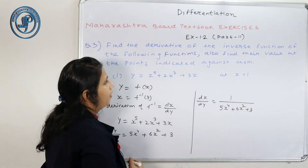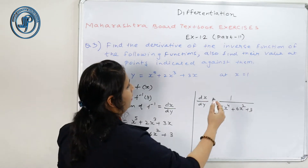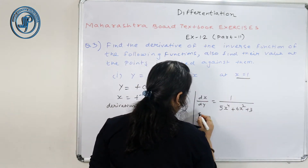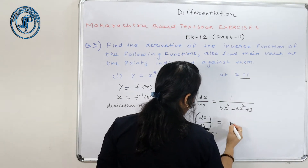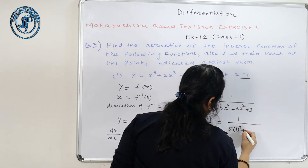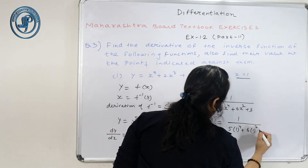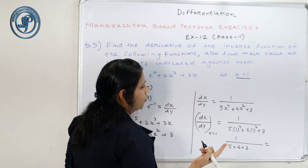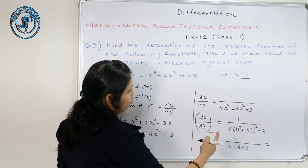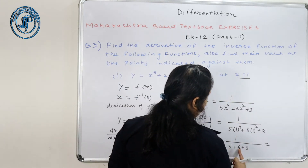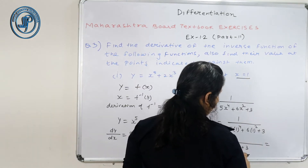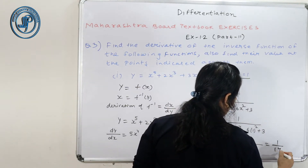But मुझे इसकी value find करनी है at x equals to 1. Means I need to find dx by dy at x equals to 1. सिर्फ x की जगह पर 1 substitute कर दूंगी. 1 का power 4 is 1, 1 का square is 1. So: 5 into 1 = 5, 6 into 1 = 6, and 3. Total = 1 upon 14.